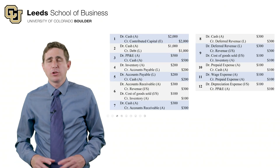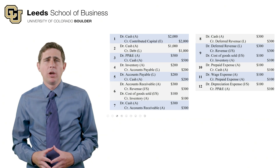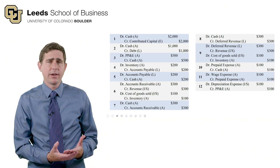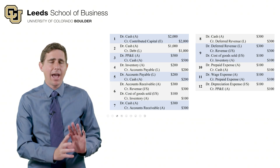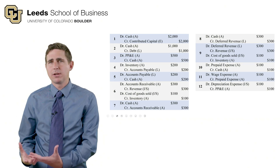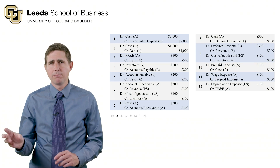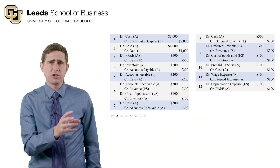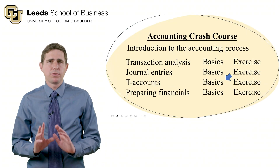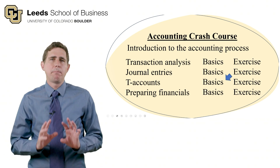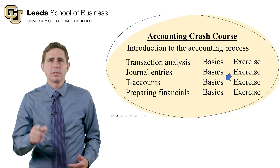That's all 12 journal entries for our 12 transactions during the year. All we did was convert our transaction analysis into debits and credits — a fairly straightforward task because there's a direct correspondence between increase/decrease and debit/credit. That's it for this video. In the next video, we'll introduce T-accounts, which is how we keep track of our journal entries. Looking forward to seeing you there.